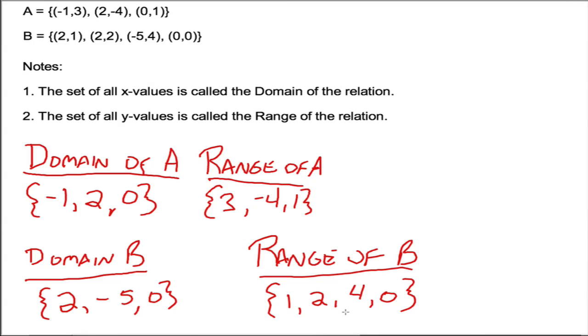Given any relation, which is just a set of ordered pairs, we can take all the X values to make up the domain of that particular relation, and all the Y values to make up the range. When you have ordered pairs, it's fairly simple to see that. When we don't have ordered pairs, it's a little more difficult—we'll get to that later. In general, this leads us into functions, which we will discuss in the next video. Study well, and let me know if you have any questions.